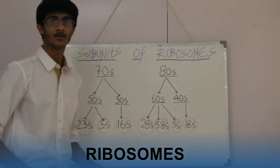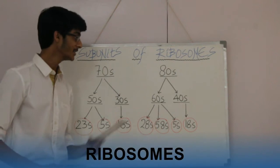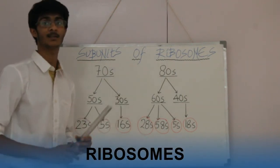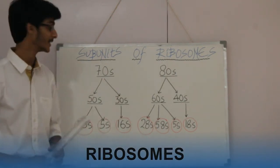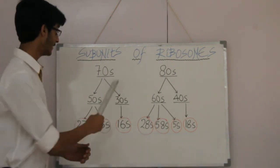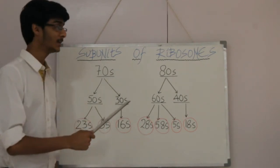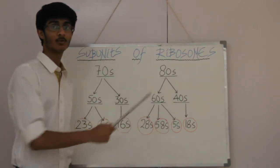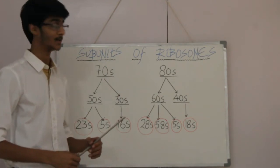Hello friends, today we are going to memorize the various subunits of ribosomes present in prokaryotic and eukaryotic organisms. We have 70S ribosome in the prokaryotic organism and 80S ribosome in the eukaryotic organism primarily.